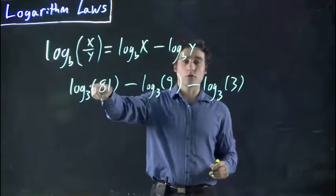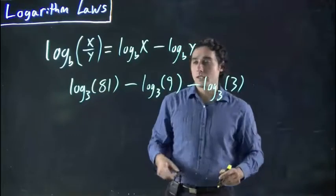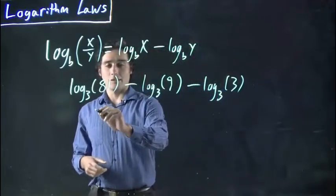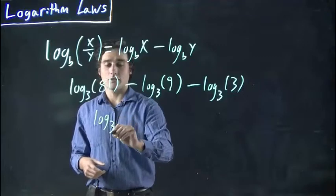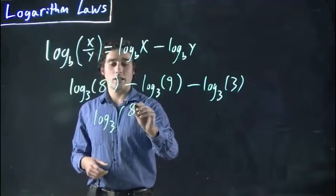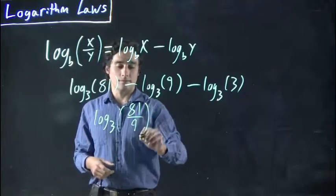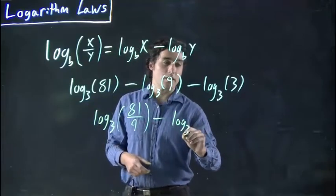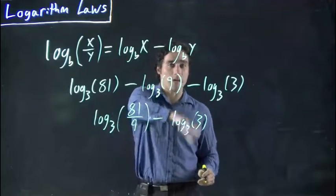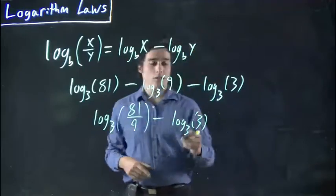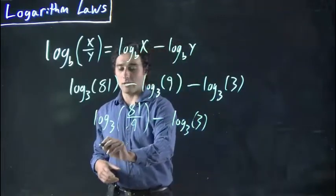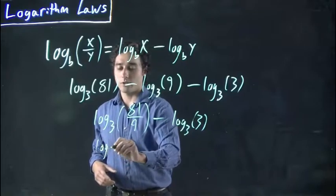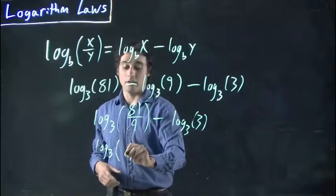We can apply this quotient rule twice. We can rewrite this as log to the base 3 of 81 divided by 9. And then we still have this minus log 3 over 3. Later on, you might feel comfortable combining it all in one step, but what we're going to get is log to the base 3 of 9